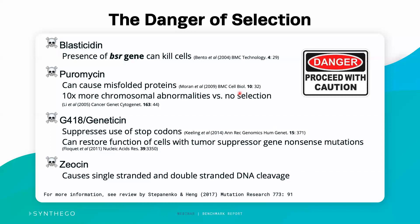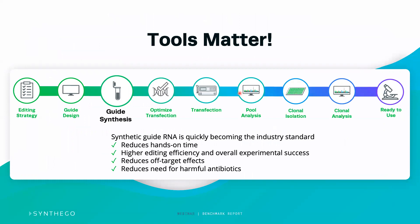If you want more information, I highly recommend checking out the review cited below, as it goes into much more detail on this area. It's a really important thing to consider in our research, because we want to do research that is meaningful and has as few artifacts as possible — because artifacts reduce the relevancy of our work. So I hope I've convinced you that tools matter. Synthetic single guide RNA is very quickly becoming the industry standard. It can reduce hands-on time, increase editing efficiencies and overall experimental success rates, and reduce off-target effects. And if you get high enough efficiency, we no longer need harmful antibiotics that can influence the biology of our cells in unpredictable ways.